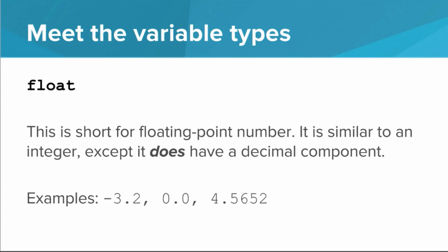Another type that we haven't seen yet, but we will in future lessons, is float. Float is short for floating point number, and this is basically like an integer, except it does have a decimal component. So negative 3.2, 0.0, or 4.5652 are all examples of floats.